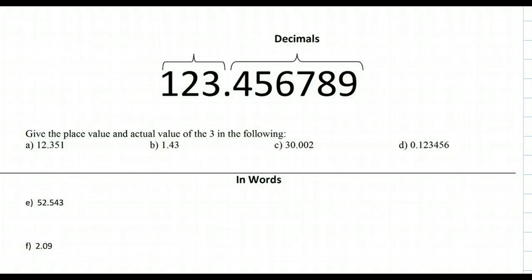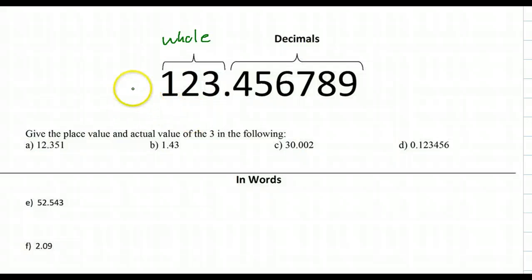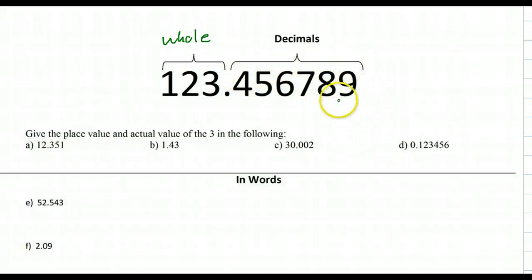Whenever you have a decimal, we have two parts. You have the decimal portion and then we have the whole number. Everything to the left of the decimal is a whole number — like 123, those are all whole. If you were talking about money, these would be solid dollar bills. Everything over here are decimals — like the dimes, the quarters, the cents — and they're different.